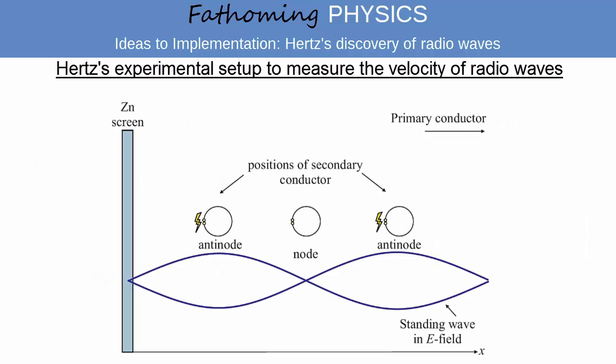To demonstrate reflection of radio waves and to measure their wavelength, Hertz set up a zinc screen 4 metres high and 2 metres broad at one end of the large lecture hall in which he was performing his experiments. He set up the primary conductor 13 metres away. In this situation a standing wave was produced in front of the zinc screen.